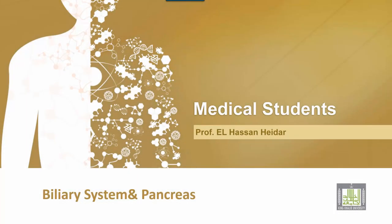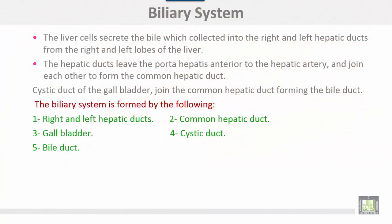The biliary system and the pancreas. The biliary system starts from the liver cells, which secrete bile collected into right and left hepatic ducts from the right and left lobes of the liver. The hepatic ducts leave the porta hepatis anterior to the hepatic artery and join each other to form a common hepatic duct. The cystic duct of the gallbladder then joins the common hepatic duct, forming the bile duct.